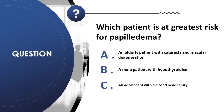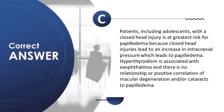Question 23: Which patient is at greatest risk for papilledema? A) elderly patient with cataracts and macular degeneration; B) male patient with hypothyroidism; C) adolescent with a closed head injury. Correct answer is C. An adolescent with a closed head injury is at greatest risk because closed head injuries increase intracranial pressure, which leads to papilledema. Hypothyroidism is associated with exophthalmos, and there is no positive correlation of macular degeneration or cataracts to papilledema.